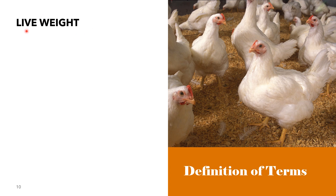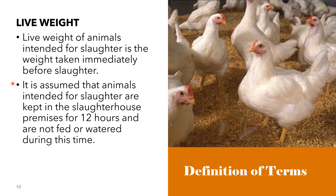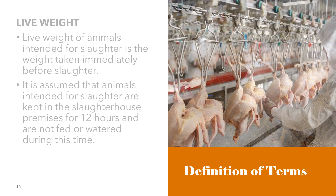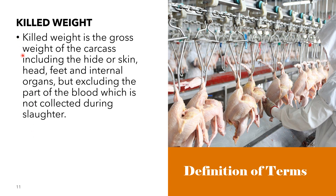Live weight is the weight of animals intended for slaughter taken immediately before slaughter. It is assumed that animals are kept in the slaughterhouse premises for 12 hours and are not fed or watered during this time. Killed weight is the gross weight of the carcass, including the hide or skin, the head, the feet, and the internal organs, but excluding blood not collected during slaughter.